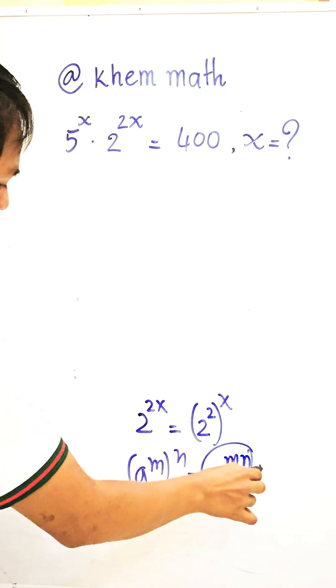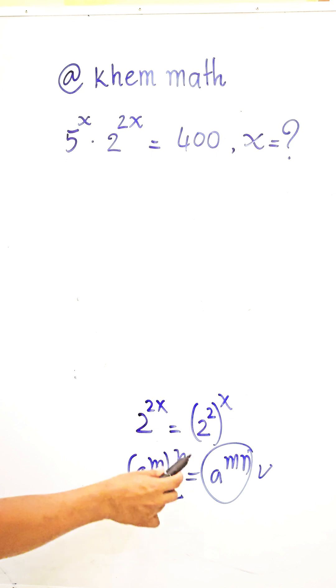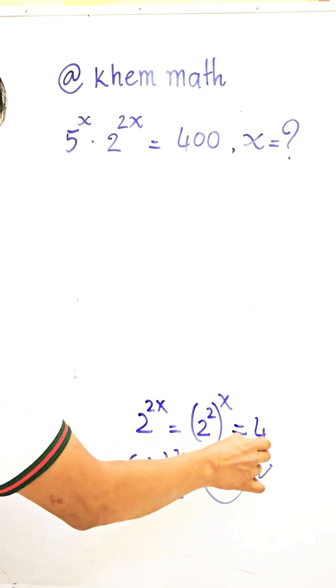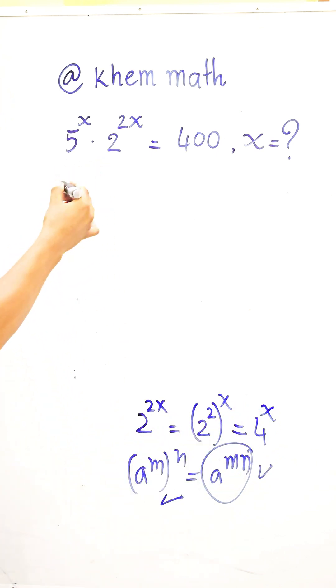So if we have this, we can rewrite this. So we get this equal to 4 all power x. So we get 5 power x times 4 power x equal to 400.